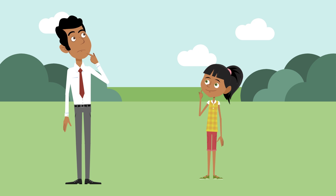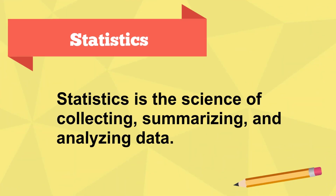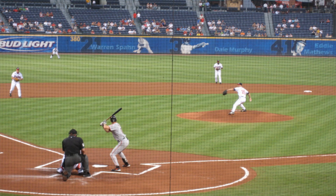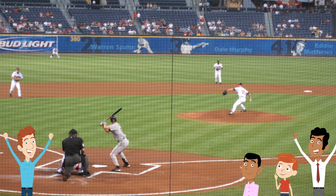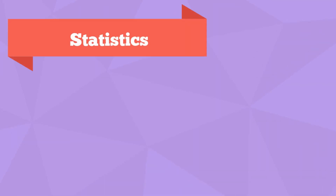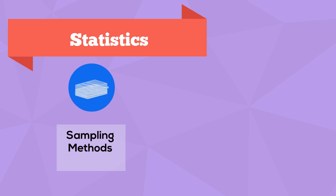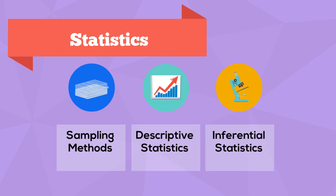So what is it all about? Statistics is the area of mathematics which primarily deals with collecting and analyzing data. Some great examples might be keeping track of your favorite team as they rack up wins and losses, or perhaps using data to try and predict the outcome of an election. More specifically, statistics can be broken down into the areas of sampling methods, descriptive statistics, and inferential statistics.